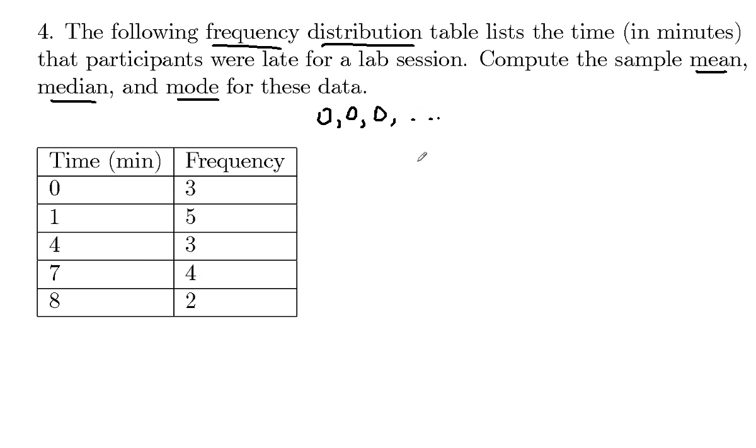But what we can do instead is add one more column to this. We'll call this the x value and we'll call this the frequency. So we're going to add one more column which is going to be the data value times the frequency. So we're just going to multiply straight across.